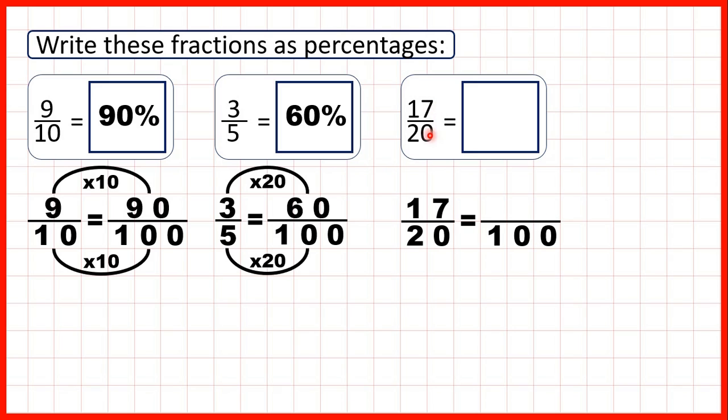Now we have seventeen-twentieths. Again, we can find our equivalent fractions. Twenty times five is one hundred. So now, to get our percentage, we need to work out seventeen times five.